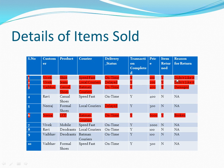For the first two returned items, the reason is the customer didn't like the product. Vivek bought a shirt and jeans and said he didn't like the product. Also, the delivery status for the jeans was delayed. The other two returned items were damaged, and they were shipped by Batman Couriers — meaning two items delivered by Batman Couriers were damaged. Additionally, two items delivered by local couriers were delayed.